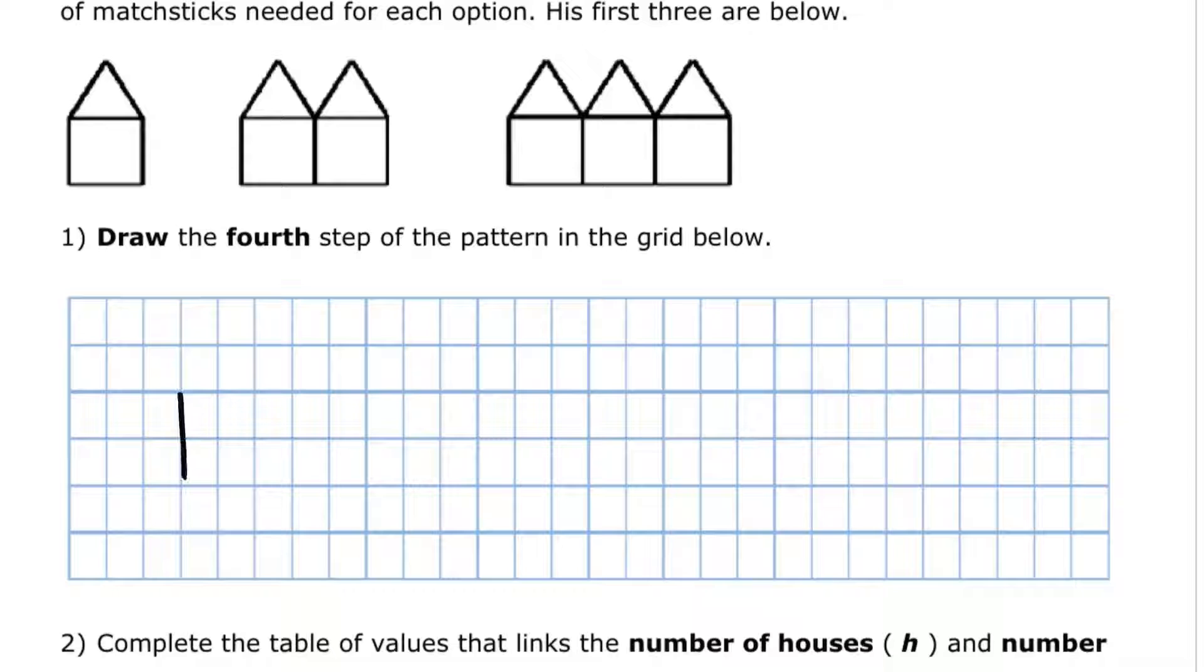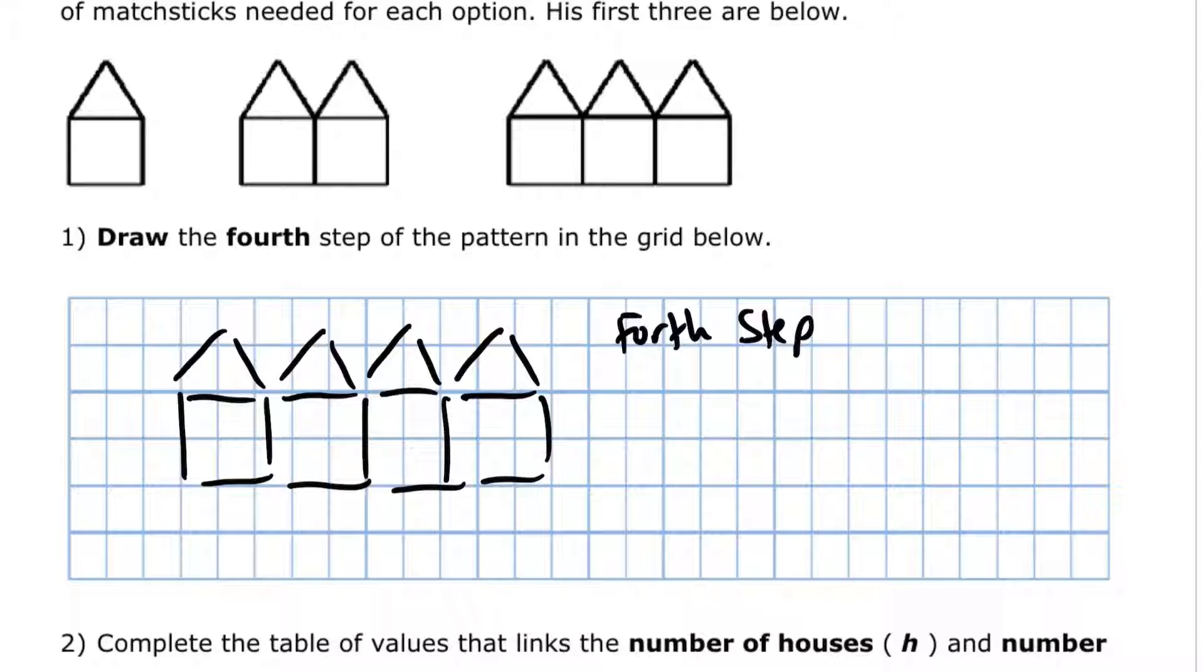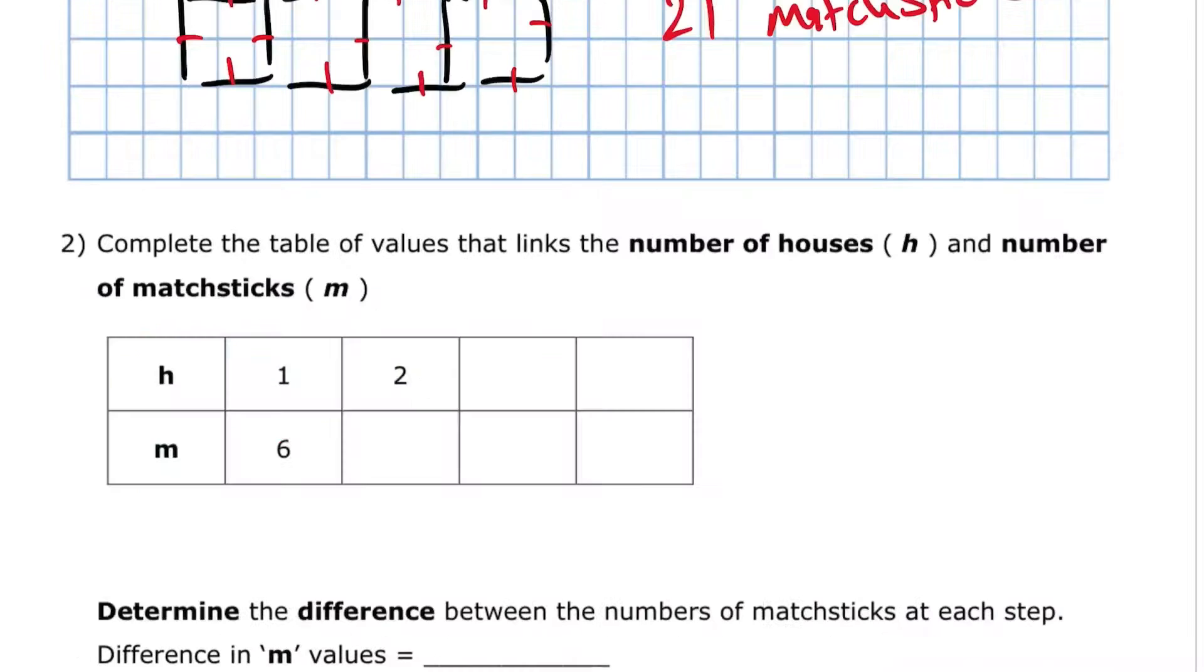So I'm just going to do it roughly here. You make sure that you use a ruler. Let's count how many we have. So there are 21 matchsticks for the fourth stage.